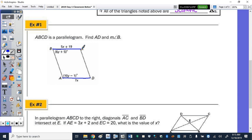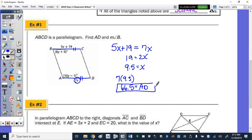Because both pair of opposite sides of a parallelogram are congruent, I know that those measures are equal. So 5x plus 19 equals 7x. Solving for x, we get 19 equals 2x, divide by 2, and x is 9 and a half. Now to find the length of AD, we need to plug it in. So now 7 times 9.5 is 66 and a half. So that equals the length of AD.